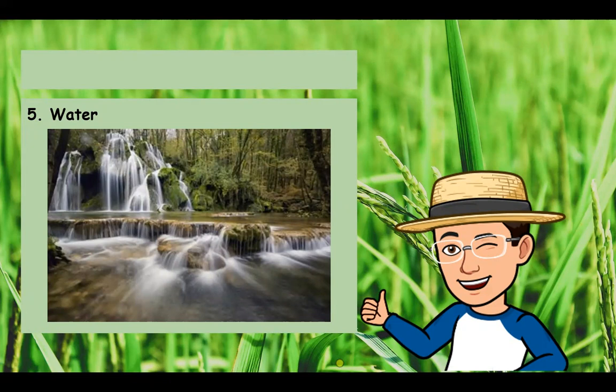The last factor to consider in selecting a suitable farm site is water. Crops need water to grow. Some farmers rely entirely on rainfall for the necessary moisture, which is not available all year round. It is important that the farm should be situated near a place where water is available.